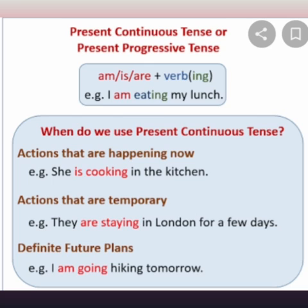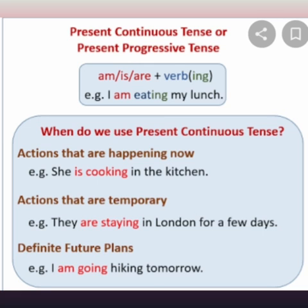Number three: definite future plans, like 'I am going hiking tomorrow.' This is a plan for tomorrow, but the verb shows an ongoing action, so we use Present Continuous Tense here. In an Urdu sentence, it ends with 'raha hai', 'rahi hai', or 'rahe hain'. For example: 'Main school ja raha hun', 'Wo gaane ga rahi hai', 'Main chai pi raha hun'. These are examples of Urdu sentences for Present Continuous Tense.